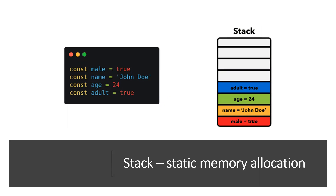The stack is a data structure that stores data on a first-in, last-out basis. We need to understand a point here: if we declare a variable using var at the function level, that memory is allocated throughout the function. The var variable would stay in the stack for the entire duration of the function.